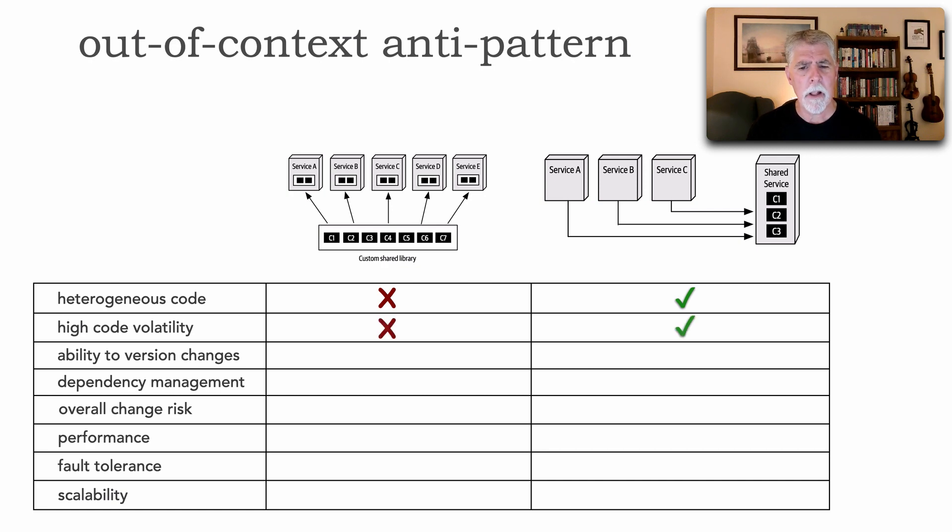But for high code volatility, that means we're constantly changing the code, it turns out a shared service works a little bit better. However with high code volatility because this is compile bound with all my services, that means any change of any code within that custom shared library usually facilitates at least at some point a retest and a redeploy of all my services.